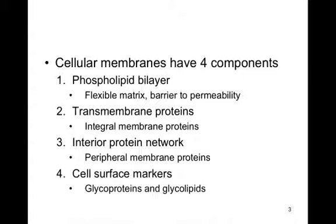Finally, there are cell surface markers — glycoproteins and glycolipids. All of these pass through the endoplasmic reticulum and then the Golgi apparatus to eventually make their way out in a vesicle to the cell membrane. The ER adds chains of sugar molecules to these membrane proteins and lipids, thus covering them in glycoproteins and glycolipids. Different cell types exhibit different variations, and these labels act as cell identity markers, allowing us to determine self from non-self cells.